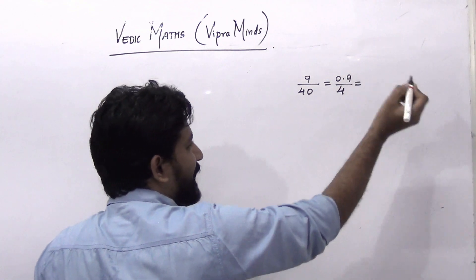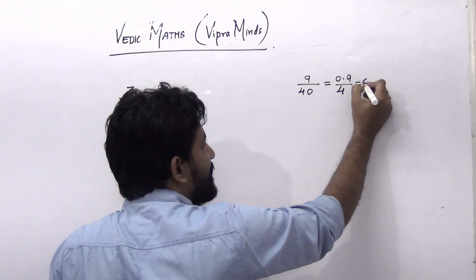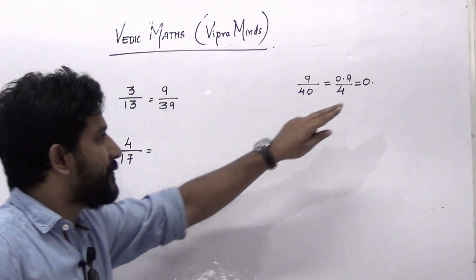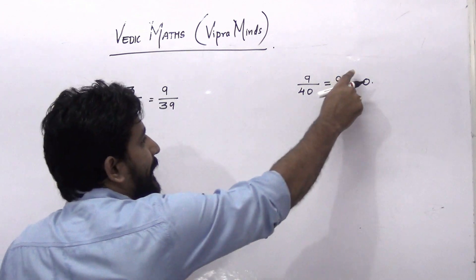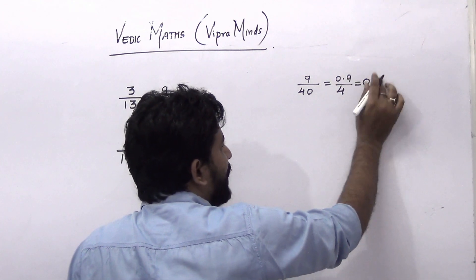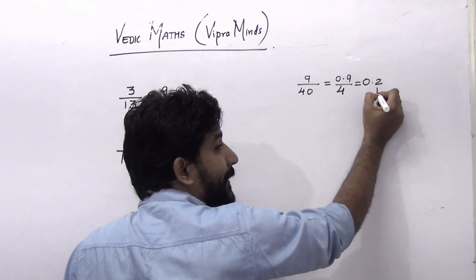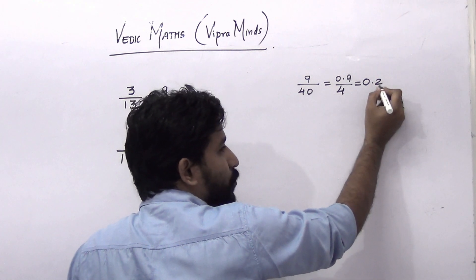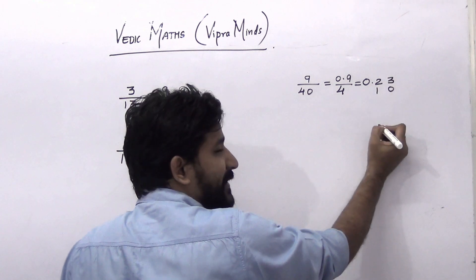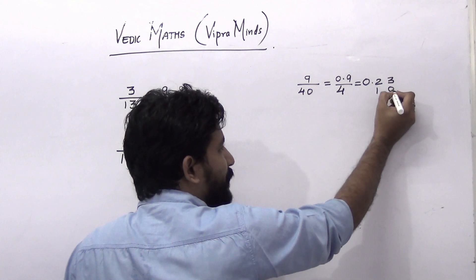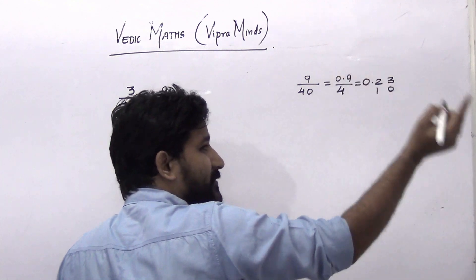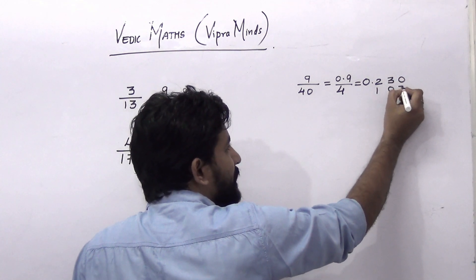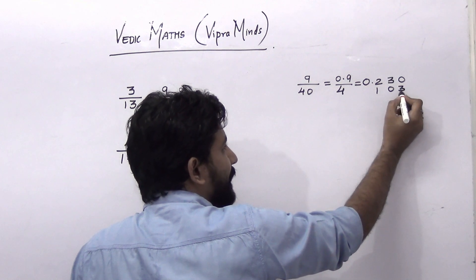Now the next step: 0 divided by 4 is 0, then 9 divided by 4. As we saw in the last video, just write the quotient and the remainder. So 9 divided by 4 — 4 into 2 is 8, remainder will be 1. The next number to divide by 4 is 12, so 4 into 3 is 12, remainder 0. Next number is 03, that is 3. Since 3 doesn't go into 4, the quotient will be 0 and remainder will be 3.